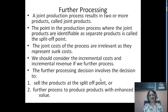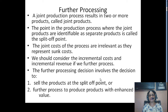A joint production process results in two or more products called joint products. For example, petroleum jelly is produced from crude oil. Crude oil passes through proper processing, and from it you get CNG, then LPG, then diesel, then petrol, and lastly the residue will be petroleum jelly. So all these products are coming out from one raw material — crude oil.